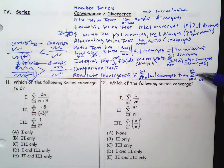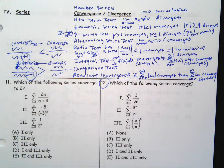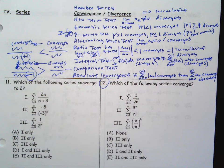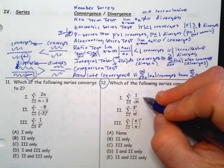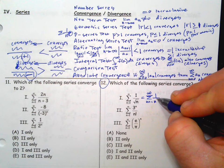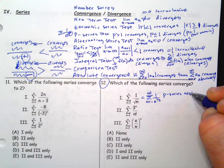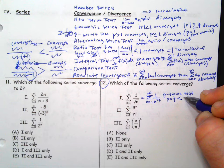Try problems 12 and 13. Number 12 asks which series converge. For the one with 1 over square root of n: that's 1 over n to the 1/2 — it's a p-series with p equals 1/2, which is less than or equal to 1, so it diverges. Anything with series I is out. The second series, 3 to the n over n factorial: if you write out the terms it's 3/1! plus 9/2! plus 27/3! plus... which looks like the series for e to the x evaluated at x equals 3. So it converges to e cubed.